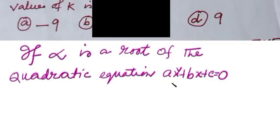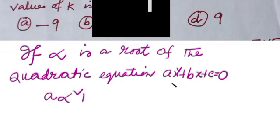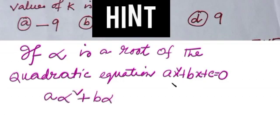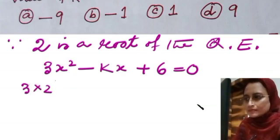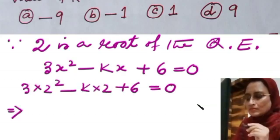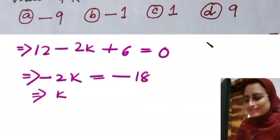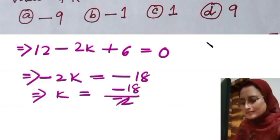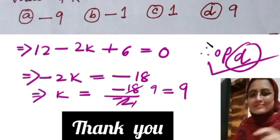The hint is: if alpha is a root of the quadratic equation x square plus bx plus c equals 0, then a alpha square plus b alpha plus c is equal to 0.